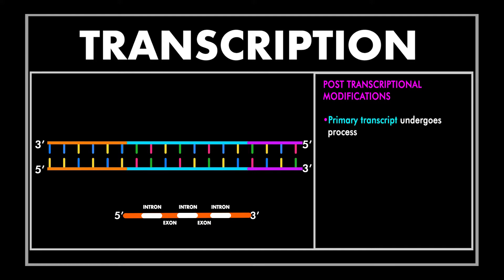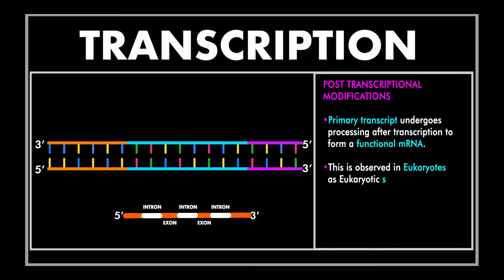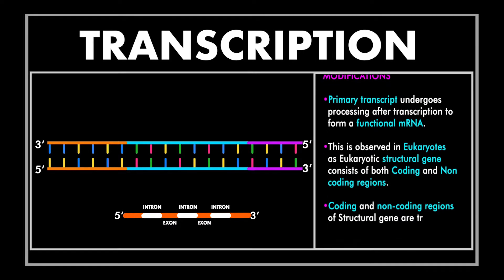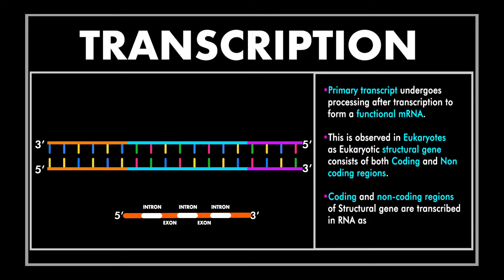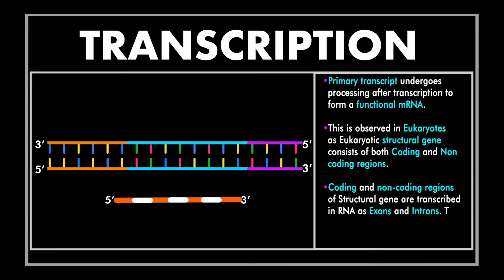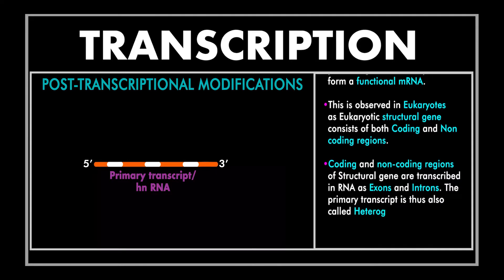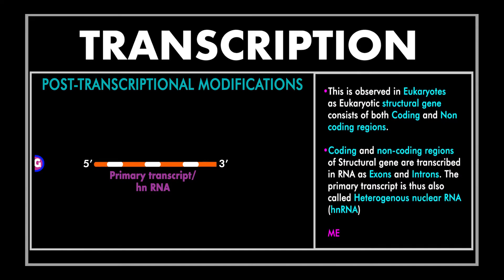This final step is called termination. In prokaryotes, the structural gene consists of only coding regions, and both transcription and translation occur in the cytoplasm, so no further processing is required for the primary transcript. But in eukaryotes, the structural gene is made up of both coding and non-coding regions called exons and introns respectively. The site of transcription is the nucleus and translation is in the cytoplasm, so further processing of the primary transcript is required — this is called post-transcription modifications.